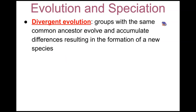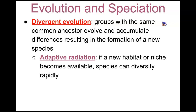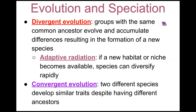We also have divergent evolution, which is when groups with the same common ancestor evolve and accumulate differences, resulting in the formation of a new species. Adaptive radiation is when a new habitat or niche becomes available and species can diversify rapidly, as that new habitat or niche creates pressure for speciation and diversity. Convergent evolution is when two different species develop similar traits despite having different ancestors — those are what we call analogous traits.